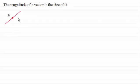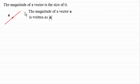So if I took a vector a for instance, then the magnitude of this vector a would be represented by this length. And we write the magnitude of the vector a as a in between two vertical lines.